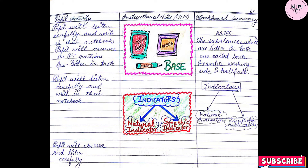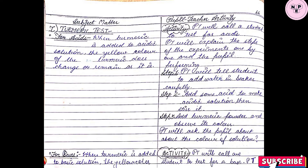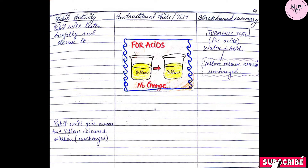Apart from bringing real-life objects, the PT can also bring handouts or flashcards so that students find it very interesting. The PT can also perform activities in the classroom with the help of students, because by performing the activity themselves, students will learn to a greater extent, as their maximum senses will be involved.